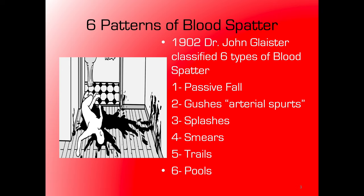For a passive fall, recall the cohesive force trying to keep blood together — gravity pulls it down and it falls to the earth's surface at about a 90-degree angle, resulting in a pretty circular drop. Depending on the surface, things like spikes and satellites can form. If you're not familiar with those, refer back to the last lecture.